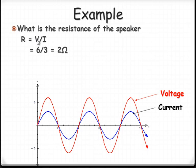Does it matter if we use peak or RMS? The answer is no, as long as you're consistent. If you use peak for voltage, you need peak for current.